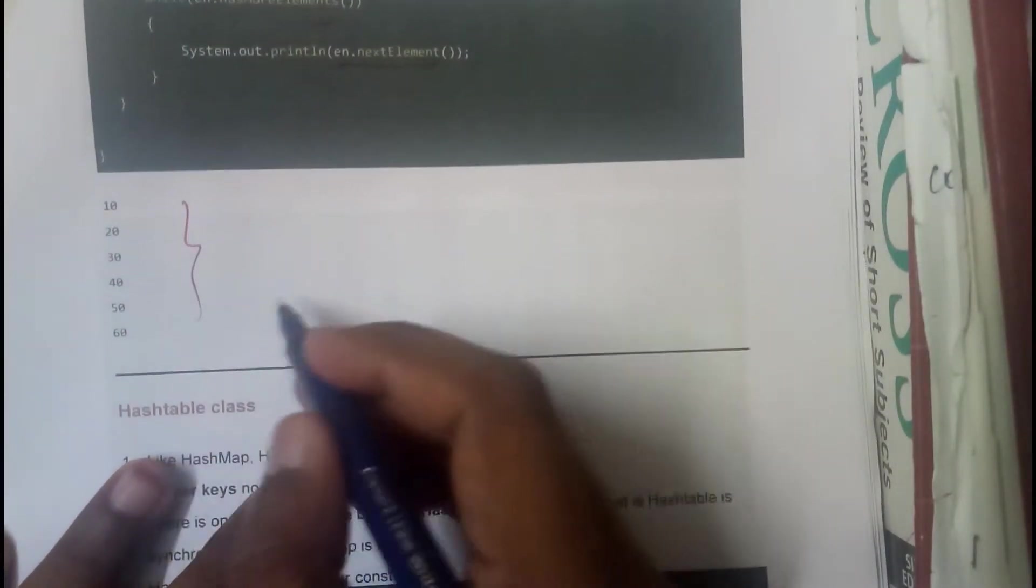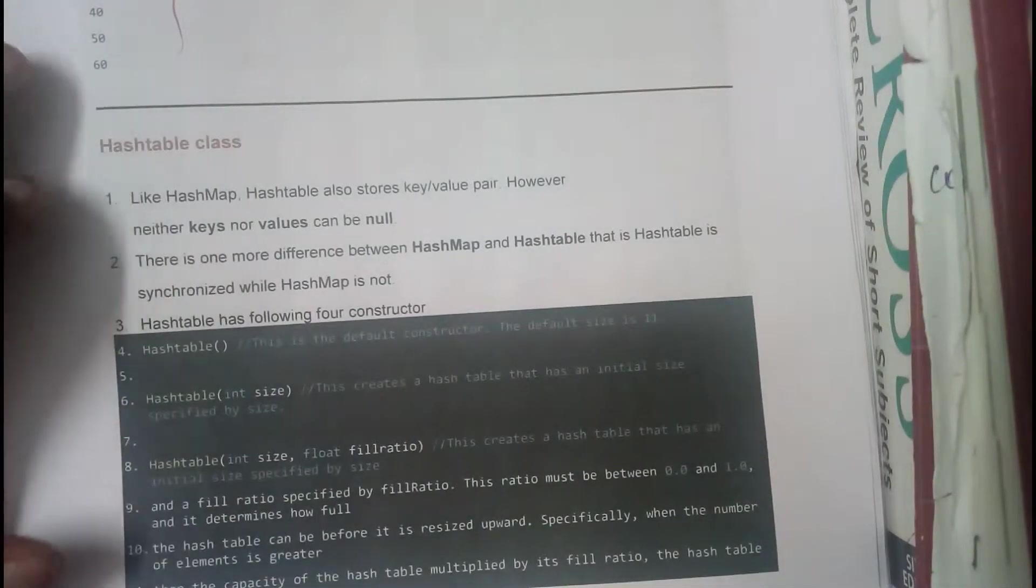In that way we have printed 10, 20, 30, 40, 50, and 60. I hope everyone is clear with that. Now let us go through hash table.